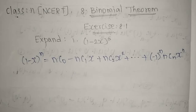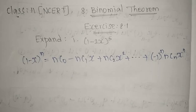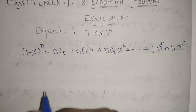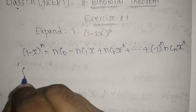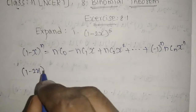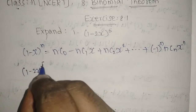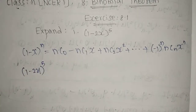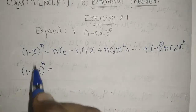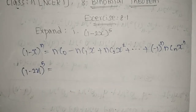Instead of x, we need to substitute 2x. So for (1 minus 2x)^5, n equals 5 and x is replaced by 2x.